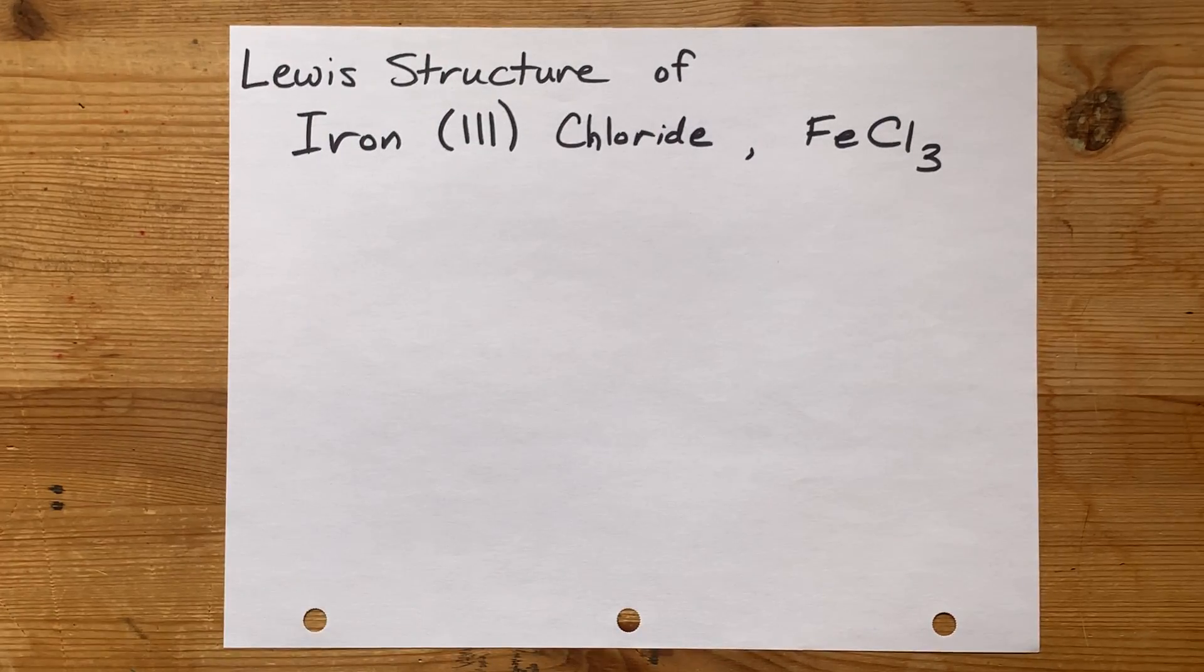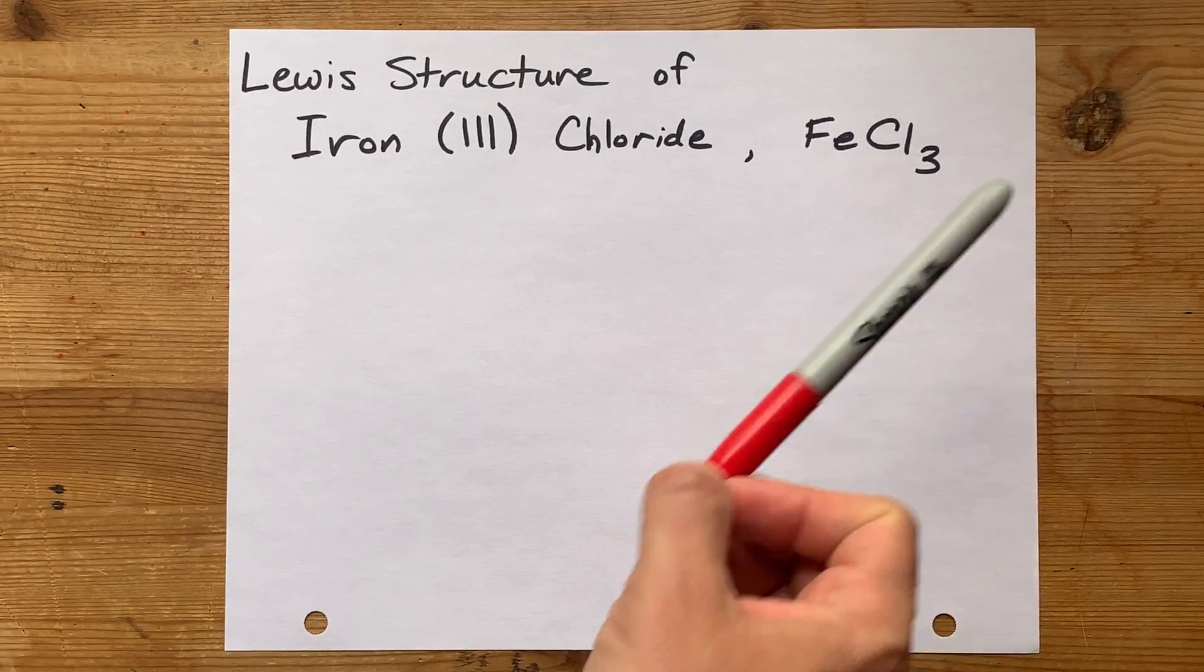We're going to draw the Lewis structure for iron 3 chloride. That's FeCl3.